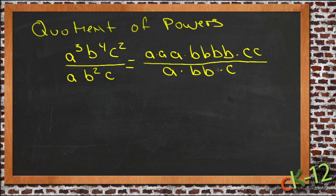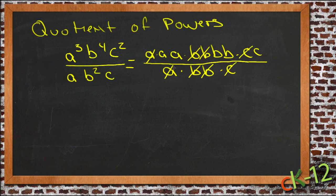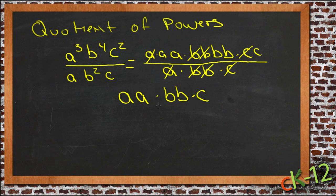Now, looking at it that way, we can see there are a number of things we could cancel. If we have a divided by a, that's 1. So we can just get rid of that first a. We have four b's up here and two b's below, so we cancel two of those b's on top with the two on the bottom. And we cancel one of the c's on top with the one on the bottom. Then all we're left with is a times a times b times b times c on top, and just a 1 on the bottom.